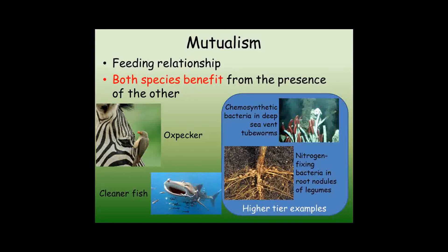Another two examples of mutualism that you'll need for the higher tier exam paper are the nitrogen-fixing bacteria that live inside the roots of legumes. Also, the bacteria living inside tube worms that live next to deep sea vents. These bacteria produce sugars from the materials being released at the vents using the energy directly from the vent. In return, the tube worms provide a safe and stable environment for these bacteria to survive.